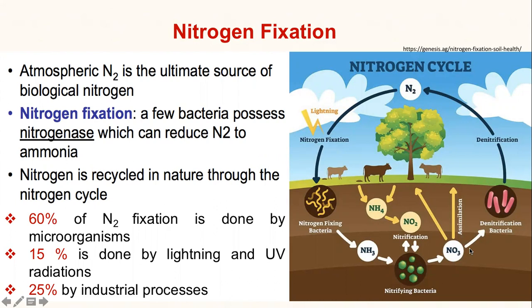Other than microorganisms, atmospheric nitrogen can be turned into ammonia during lightning — around 15% of nitrogen fixation is done during lightning or even by UV radiation. Around 25% of nitrogen fixation occurs through various industrial processes. But the majority — over 60% — of nitrogen fixation is done by various microorganisms and is recycled through the nitrogen cycle.